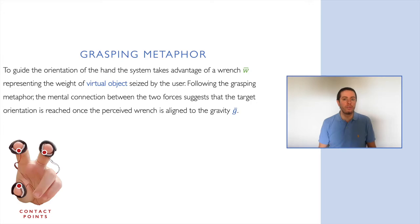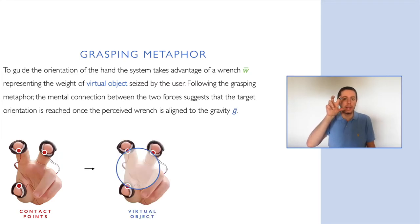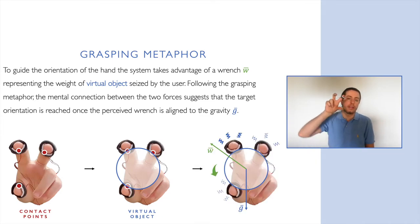To guide the orientation of the hand, the system takes advantage of a virtual wrench. Given the hand with an arbitrary fingertips configuration like this one, software collects data from a tracking system and estimates the contact points. The algorithm computes a virtual sphere fitting three points, the three fingertips. We know that it is always possible to find a sphere matching these points. Then, given the desired new hand orientation, a virtual wrench is generated and applied to the virtual object.